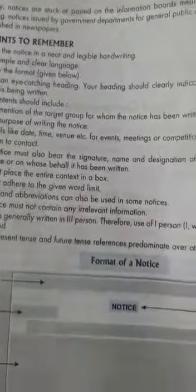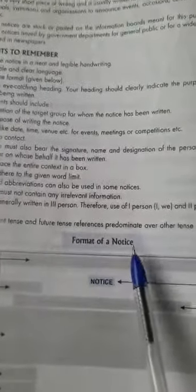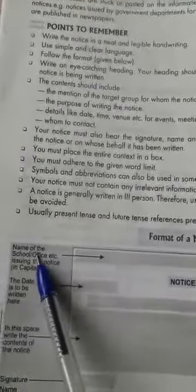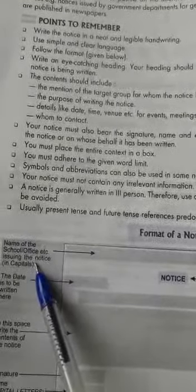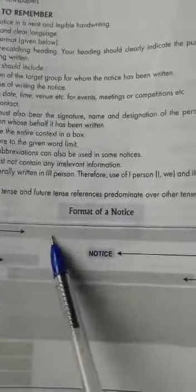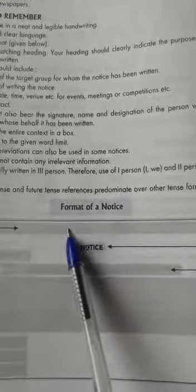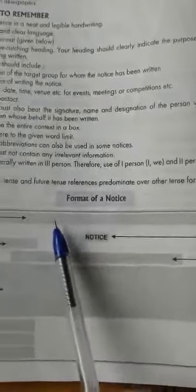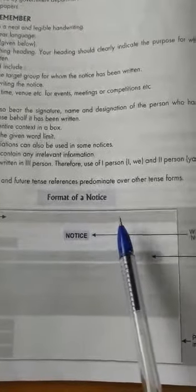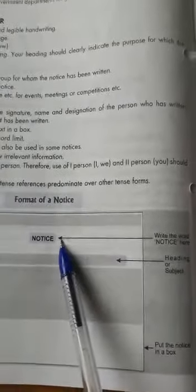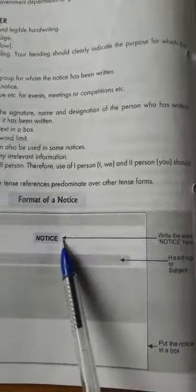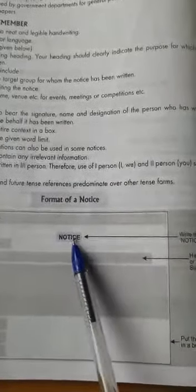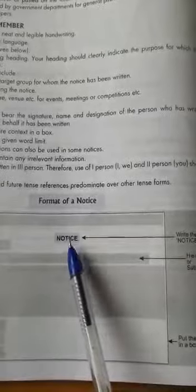Now let's go through the format of the notice. First of all, we have to mention the name of the school, institution, or organization issuing the notice. The name of the institution or school issuing the notice should be mentioned in capital letters. Next comes writing the word NOTICE, to indicate that this body of content is a notice, also written in capital letters.